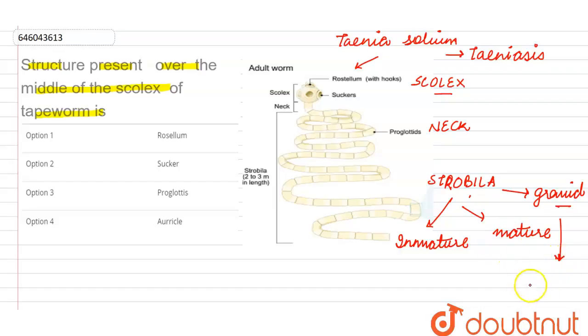So here we see that the anterior part, that is the scolex or the neck has got a cone-like structure which is called as rostellum and this rostellum has got 22 to 32 curved structures which are called as hooks.